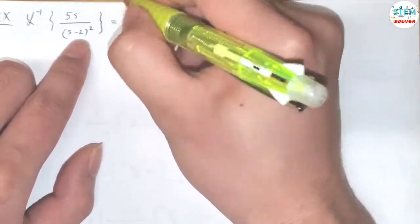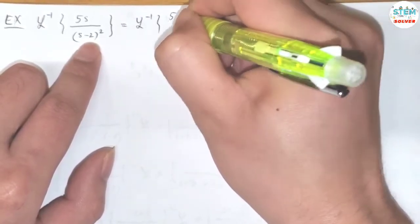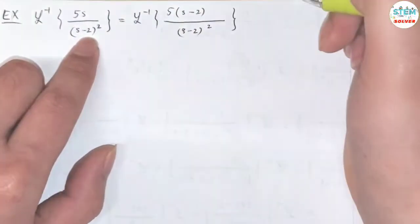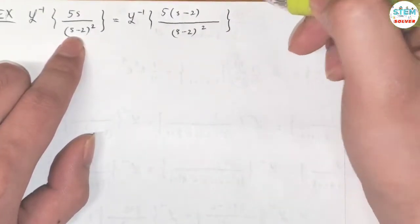So how to make that? We'll just make what we need. So we need (s-2) on top, so we'll just make it, right? And then we have to fix it, of course.